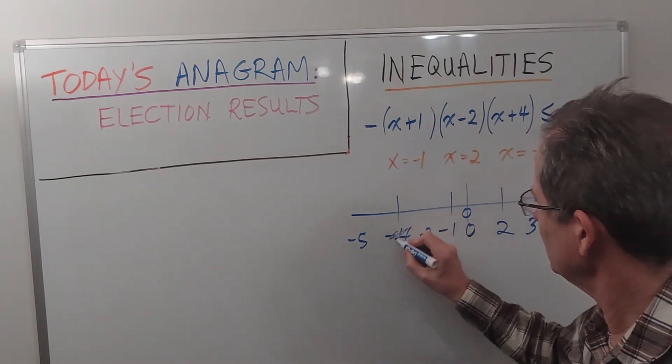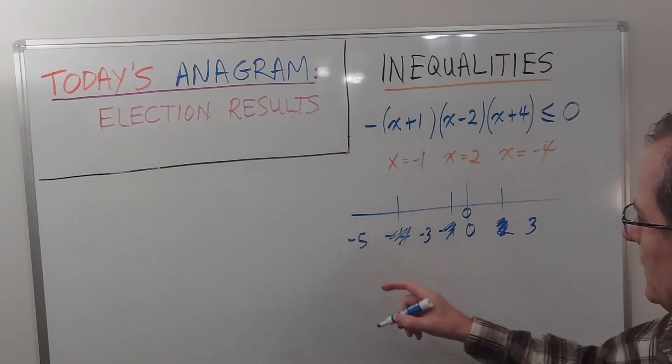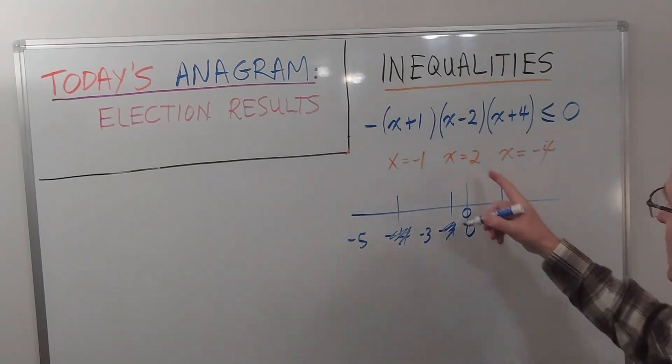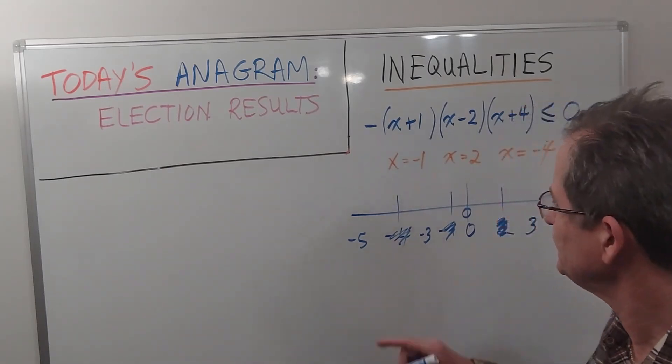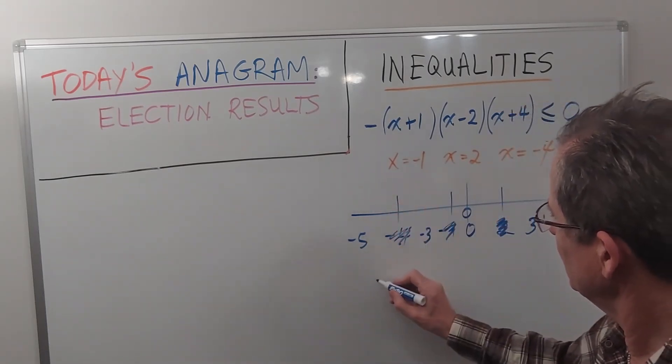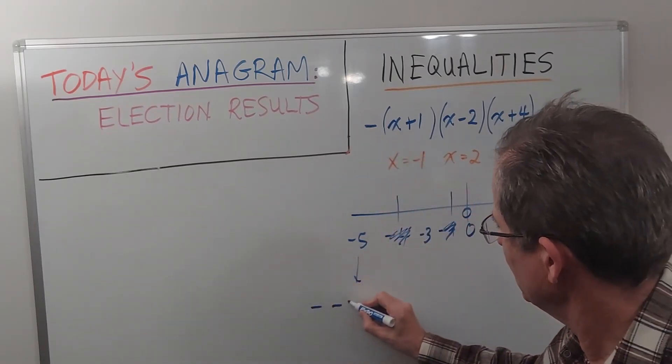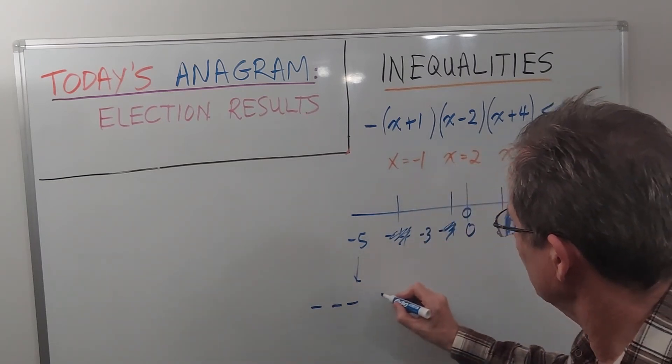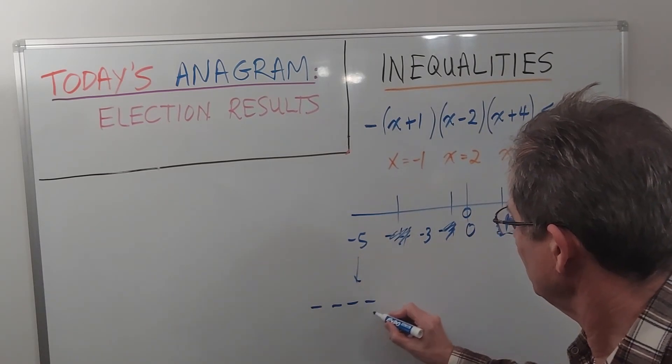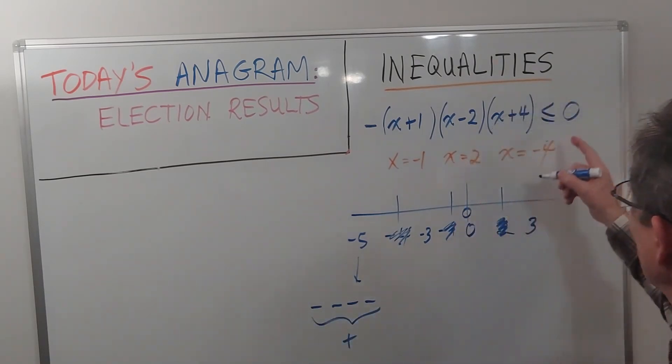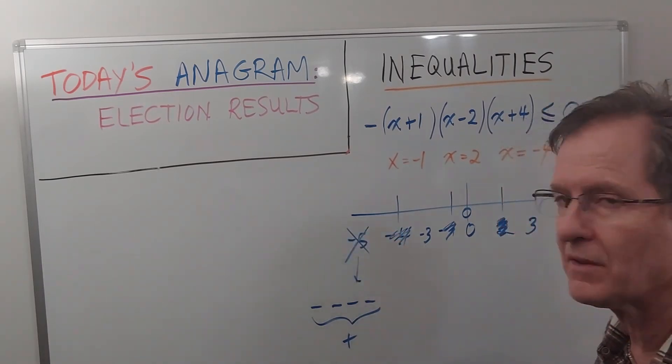So we don't have to worry about those key numbers now. If I plug in a number such as these into this expression, do I get negative or positive? Well, let's see. Negative 5: I've got a negative at the front, that becomes negative, that becomes negative, and that becomes negative. So that would give me overall positive. I don't want positive, so that's not part of the solution.